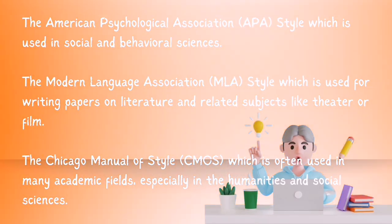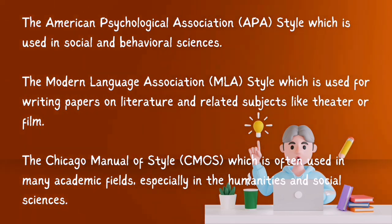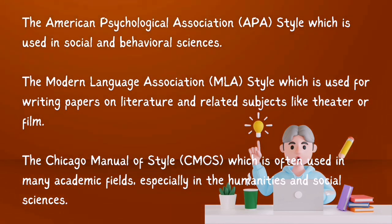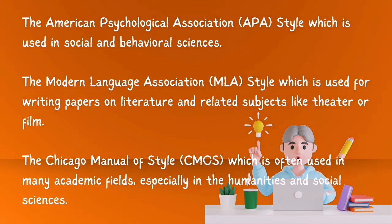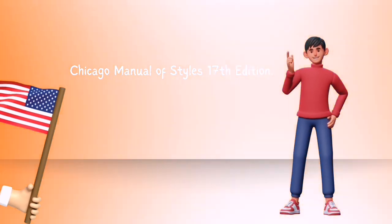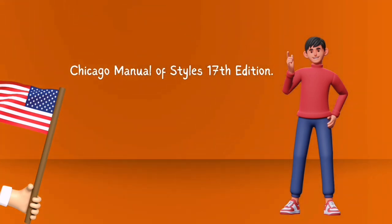There are many styles or formats in citing or listing sources, depending on the subject. The three main citation styles are: the American Psychological Association APA style, which is used in social and behavioral sciences; the Modern Language Association MLA style, which is used for writing papers on literature and related subjects like theater or film; and the Chicago Manual of Style CMOS, which is often used in many academic fields, especially in the humanities and social sciences. In this module, we will follow the bibliography annotation standards specified in Chicago Manual of Style's 17th edition.